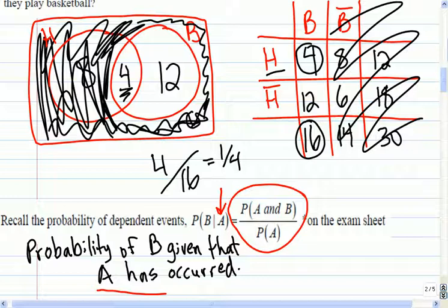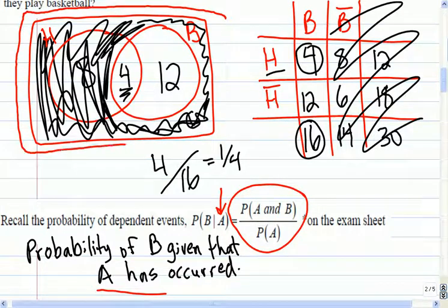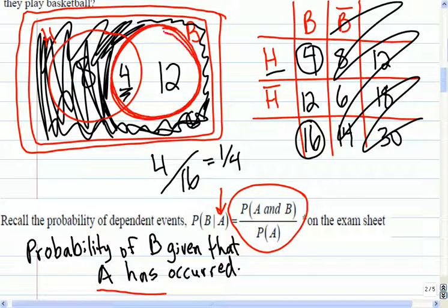For example, if we know the event A has happened, that's what this says here—A has happened, of the original experiment that we had. This thing right here—that means our sample space is no longer the entire experiment. It is only those that are the event which has happened, which for us was basketball. So that's the event A, which for us was basketball.